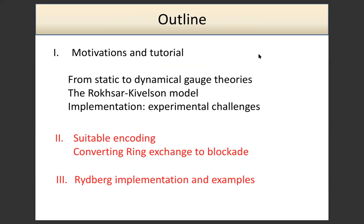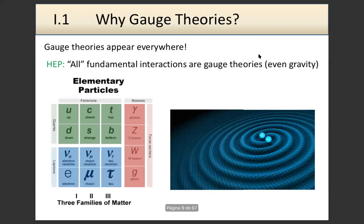I will speak about the challenges of implementation — challenges we also have in tensor networks. Most of the interesting physics arises when we go to 2D with magnetic interactions, and these interactions are very hard to get in a simulator. Finally, I will go to the new part: showing that this theory can be written in a way that resembles the physics of the Rydberg blockade, and then explain how we plan to implement it and the benchmarks we did.